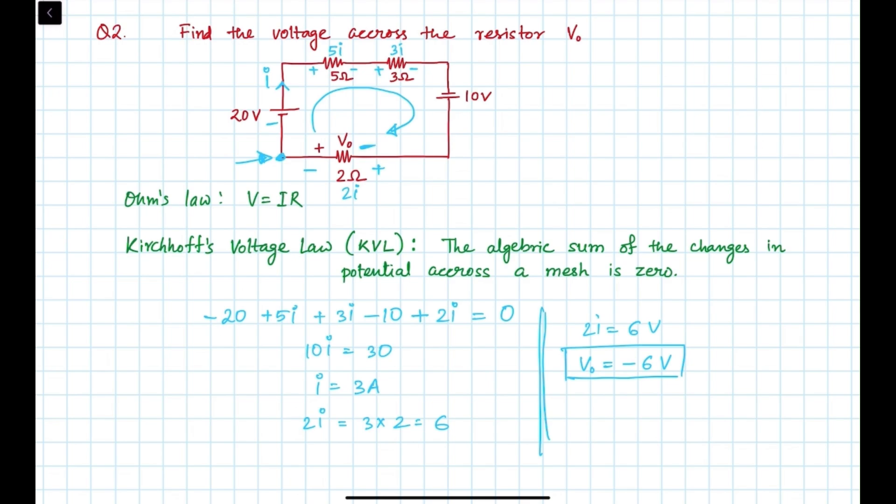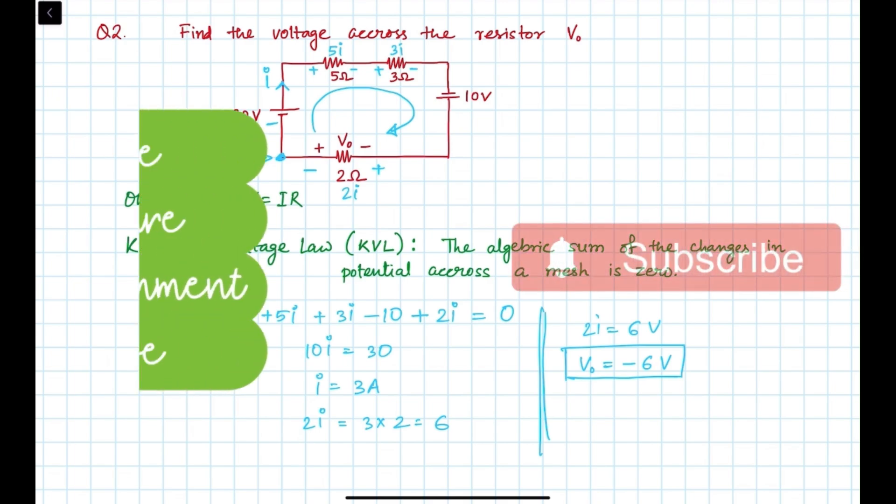If we change the polarity of V0 - right hand side is plus and this side is minus - then obviously the answer will be 6 volts. I hope this concept is clear now. In future we will be using this theory again and again in many places, so you have to have a very good understanding of this concept. If you have any doubt, please write in the comment section. Thank you.